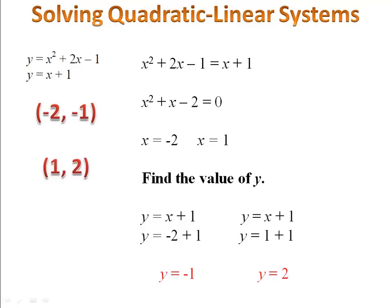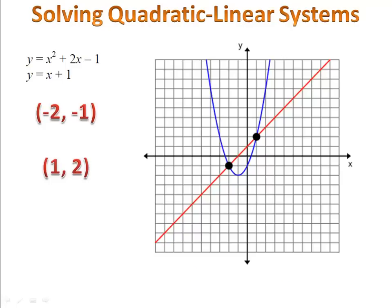Remember, what this really means is if you were to take both of those equations and graph them, they would intersect at the points (-2, -1) and (1, 2).